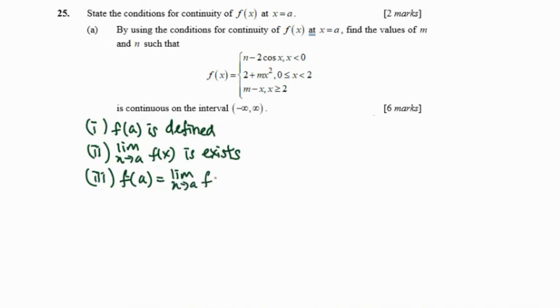Number three, f(a) must equal the limit as x approaches a of the function. Here we get two marks total: the first two conditions give one mark, and the last condition gives another mark.